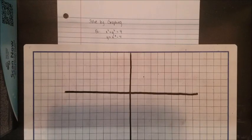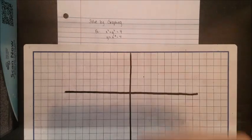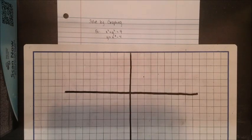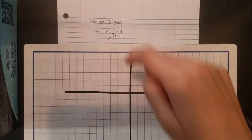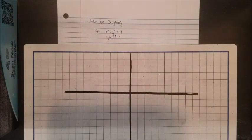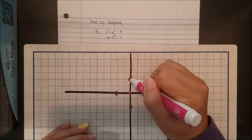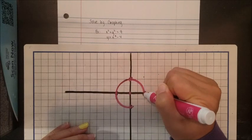Starting with graphing because it's the most visual way to see what we're solving for. First example: x squared plus y squared equals 4 as my first equation, and y equals x squared minus 4 as my second. First, figure out what kind of shapes we're graphing. x squared plus y squared equals 4 looks like a circle — it matches the form (x minus h)² plus (y minus k)² equals r². So the center is at (0, 0) with a radius of 2.